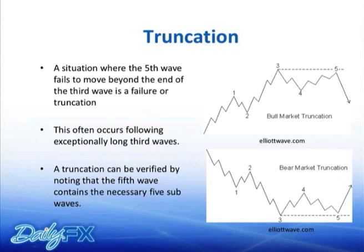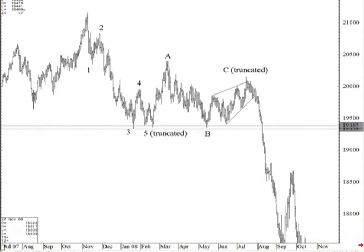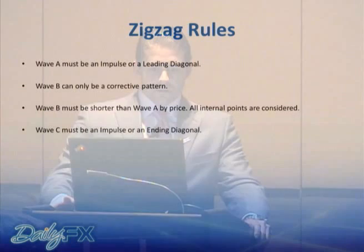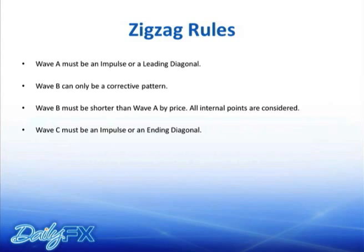Why truncations are important even if you recognize them after the fact: you know then when to count your next count from — we know that wave three starts from here, not from here. Zigzag rules: wave A must be an impulse or leading diagonal; it can't be three waves. If it's three waves, then you probably have a flat. Wave B can only be a correction — can be a triangle or a zigzag itself. You cannot have both waves A and C be diagonals.